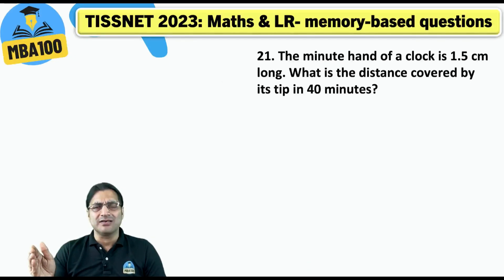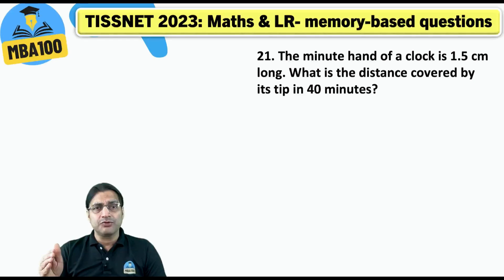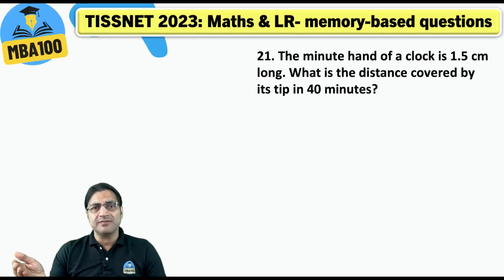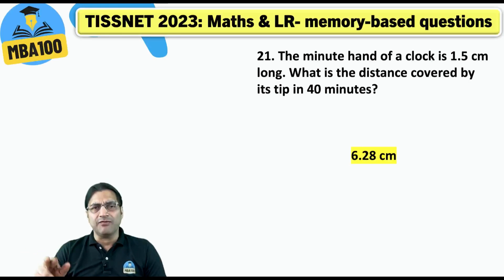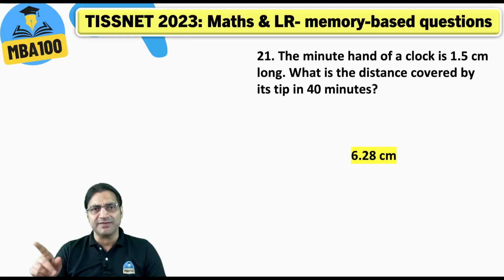The minute hand of the clock — the answer would be 2/3 × 2πr × 1.5, which gives 6.28 centimeters. Why 2/3? Because 40 minutes, not 60 minutes. In 60 minutes the full circumference would be complete, so for 40 minutes it is 2/3 of the circumference.